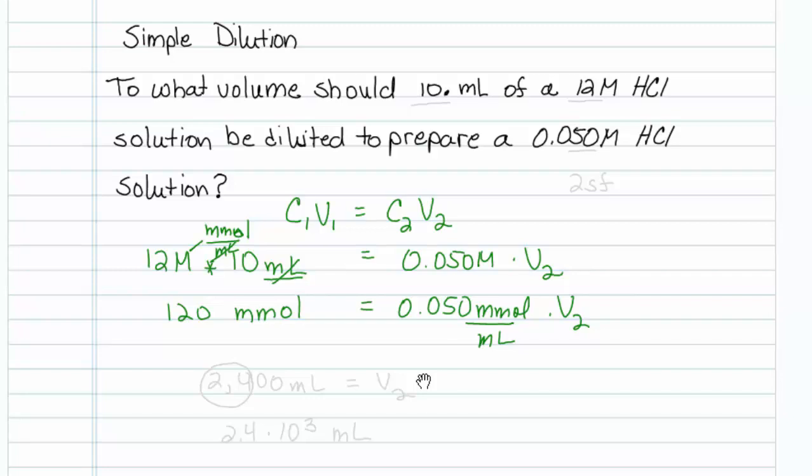Well I just have to take 120 divided by 0.05, and that's going to give me 2400 mls equals V2, and of course we have to pay attention to sig figs.